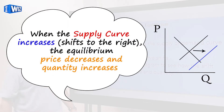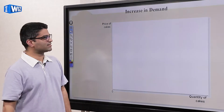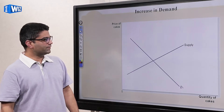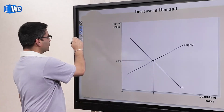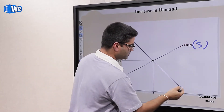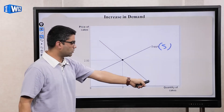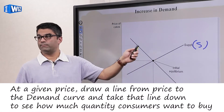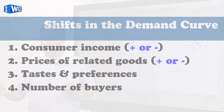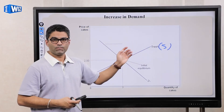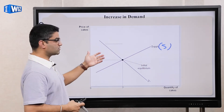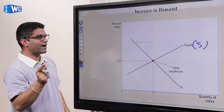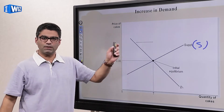Let's start with a simple example using cakes. We have a supply curve and a demand curve — I've labeled it D1 because there's going to be an increase in demand, moving from D1 to D2. That's your initial equilibrium price, equilibrium quantity, and initial equilibrium point. When curves shift, increases are always to the right and decreases always to the left — for both supply and demand. Don't think of these movements as up and down; it's always right and left.